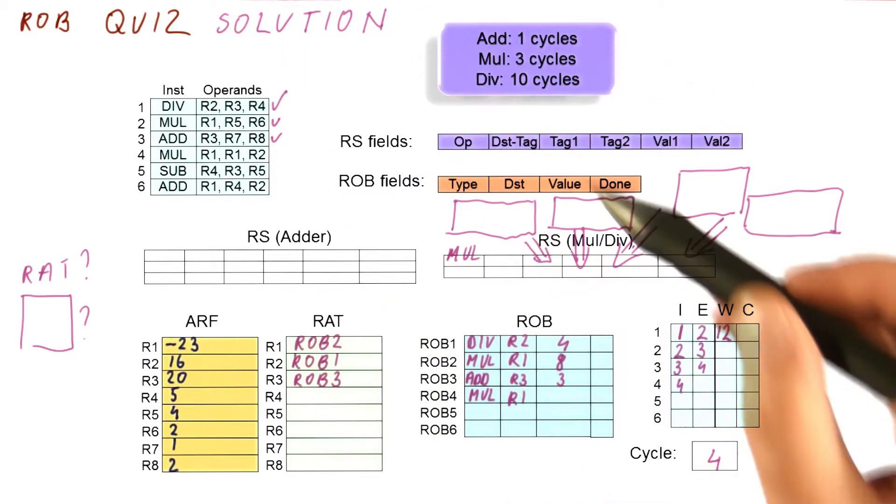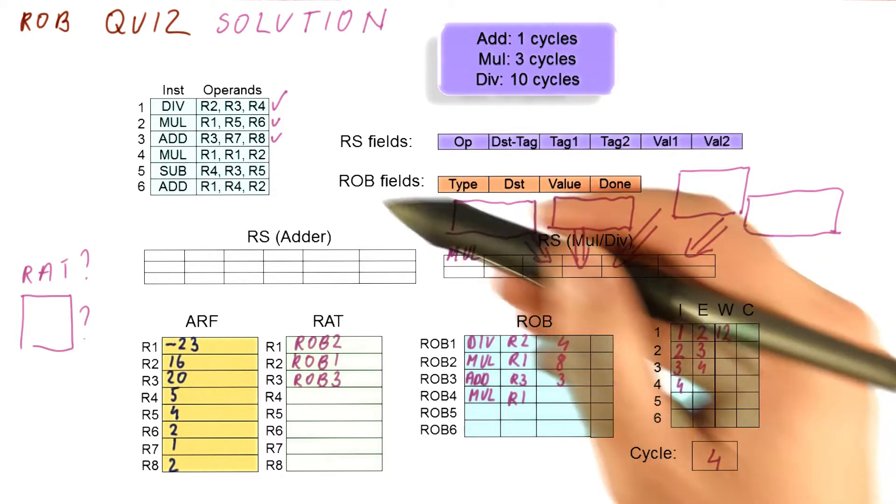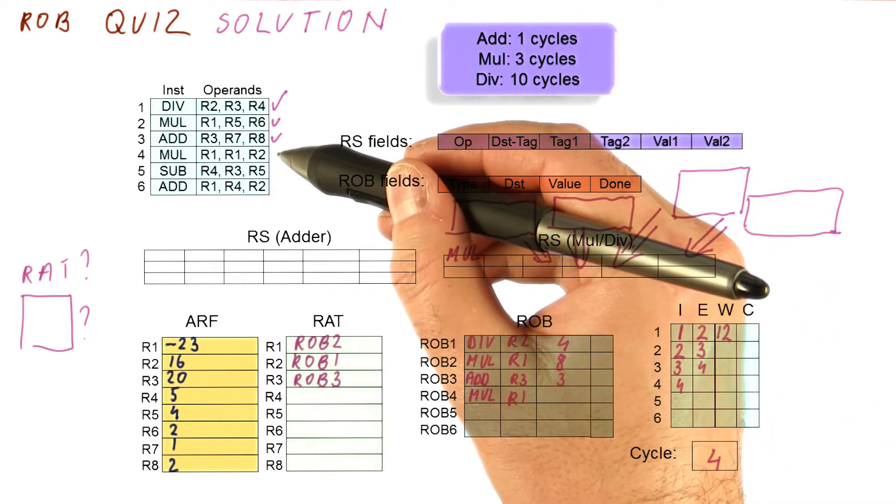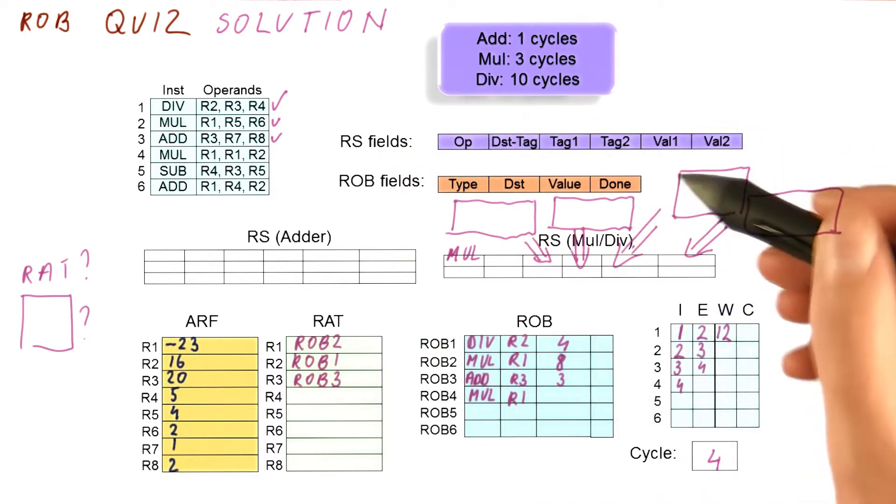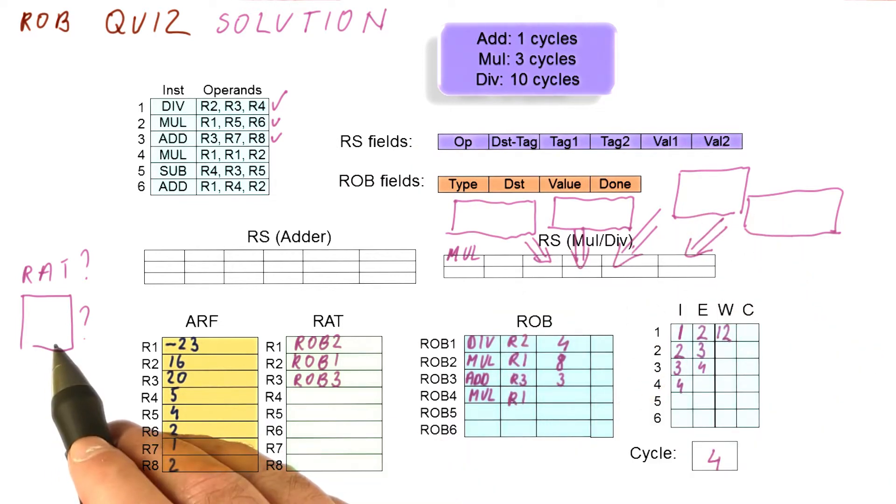So this is our continuing solution for this multi-part quiz. We have begun issuing instruction MAL4, so the question is now: what goes into the fields of the reservation station? And also, which RAT entry is going to be modified?